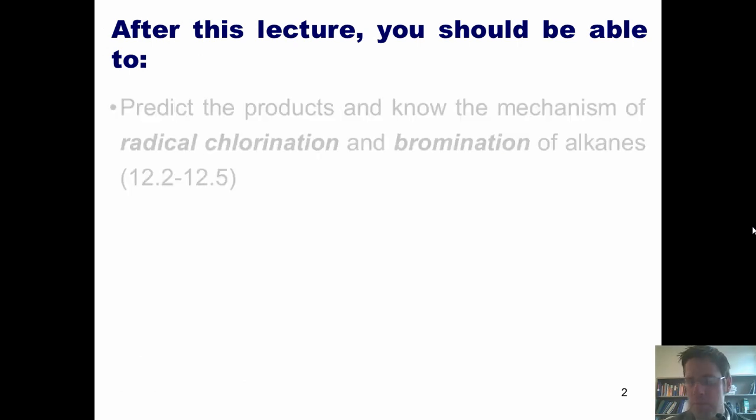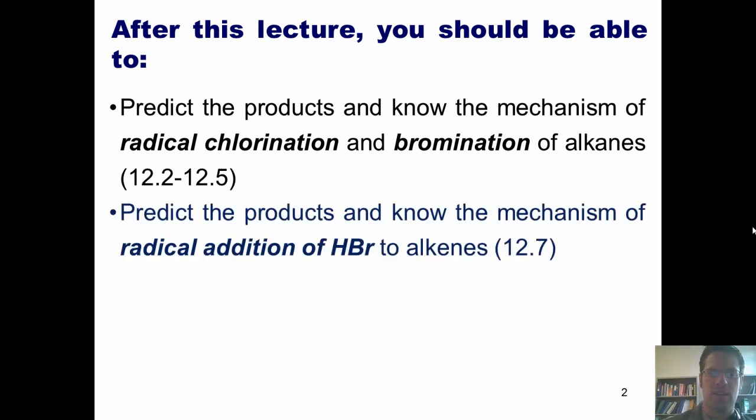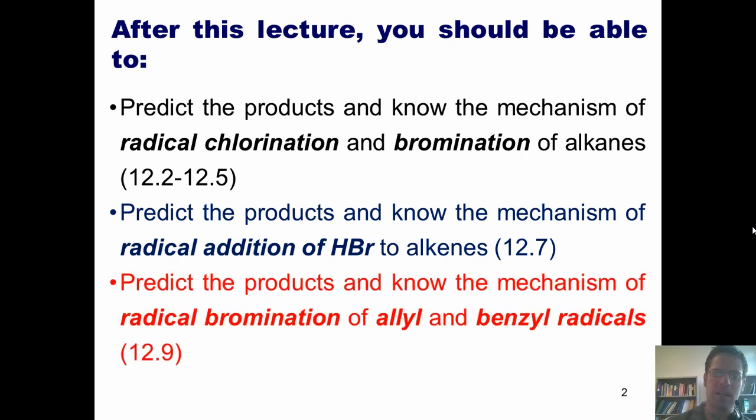After this lecture, you should be able to predict the products and know the mechanisms of radical chlorination and bromination of alkanes, predict the products and know the mechanism of radical addition of HBr to alkenes, and predict the products and know the mechanism of radical bromination of allyl and benzyl radicals. You should note that we will skip Section 12.6 from our text.